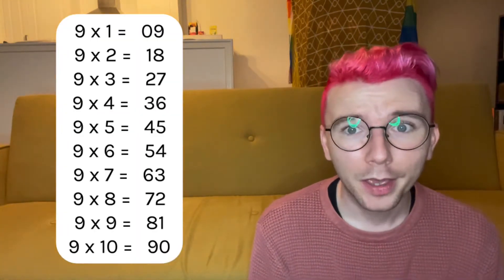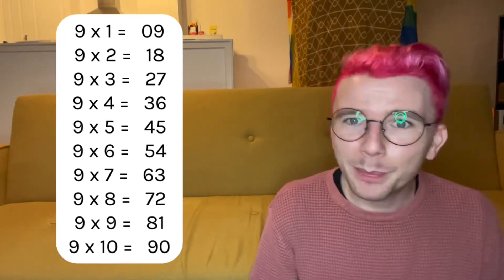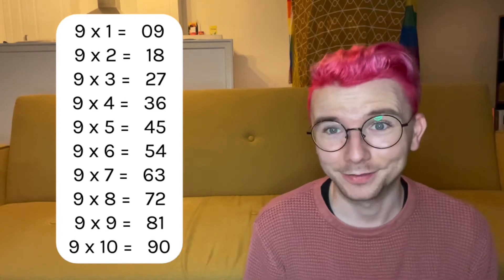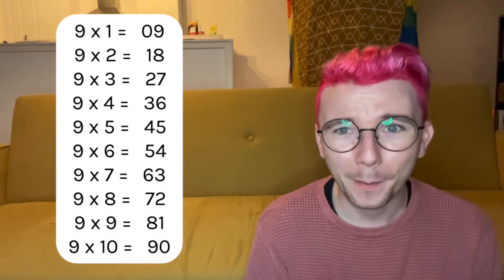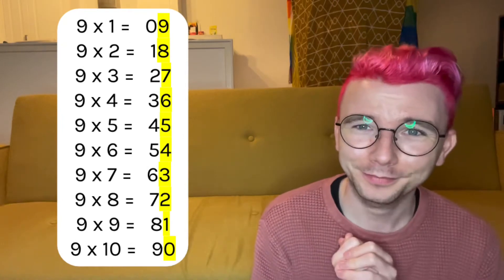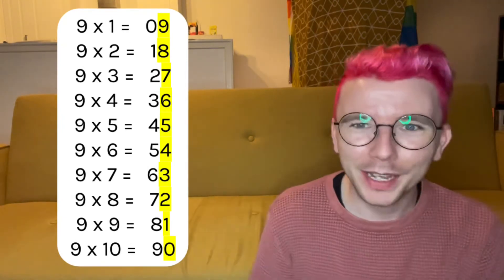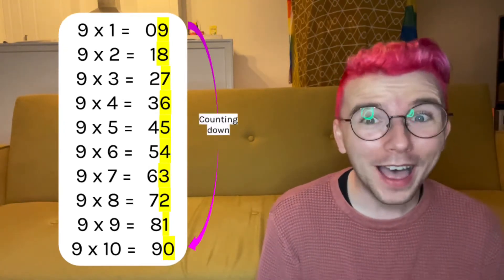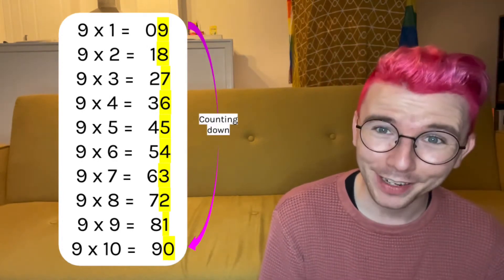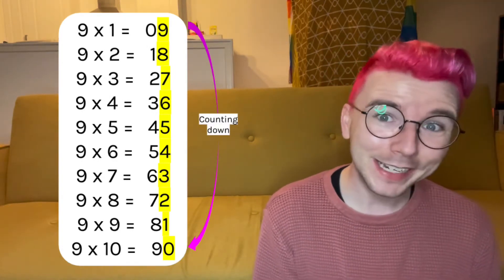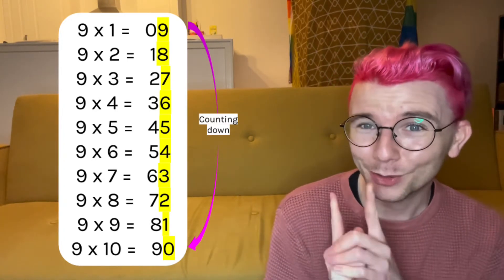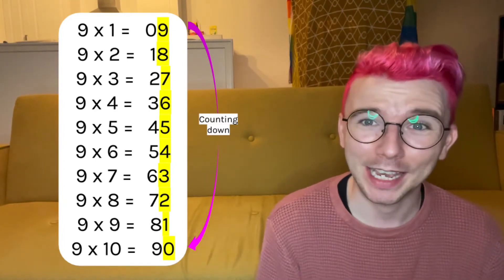Now, can you already see any patterns in the nine times table between one and ten? If not, let's go a bit deeper. I'm going to highlight the units. Can you see anything happening with those numbers? I've noticed that they are counting down from nine. The units column goes down nine, eight, seven, six, five, four, three, two, one, zero. So that's one pattern that's in the nine times table.